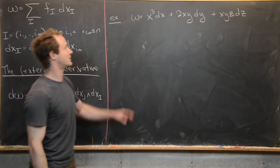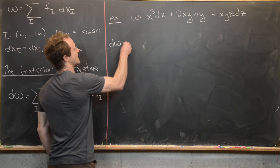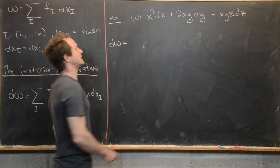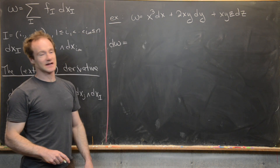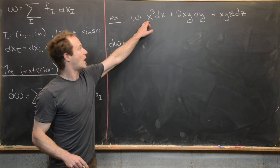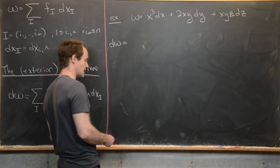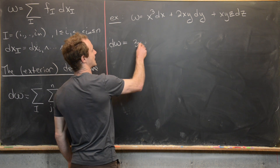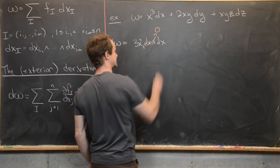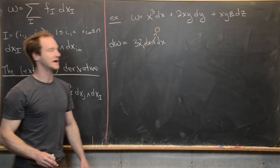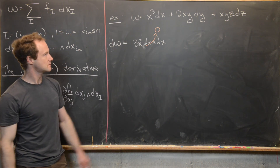For our first example, we have a 1-form on R³ and we're going to find its exterior derivative. So d(omega) means we take the partial with respect to x giving dx wedge dx, the partial with respect to y giving dy wedge dx, and the partial with respect to z giving dz wedge dx. But notice most everything cancels: the partial with respect to x gives 3x² dx wedge dx, which is zero since dx wedge dx = 0.